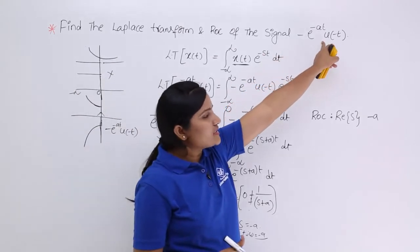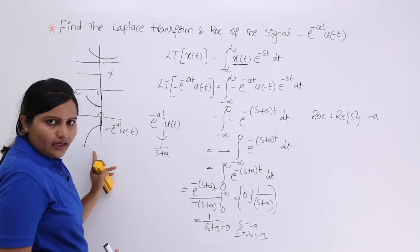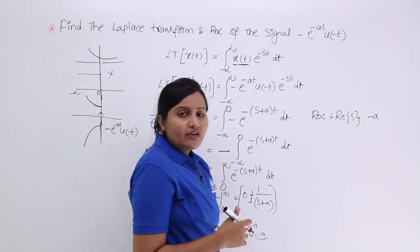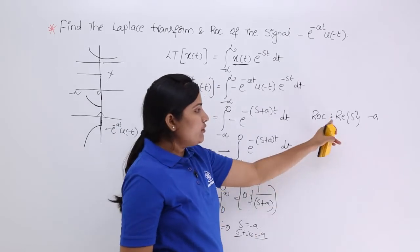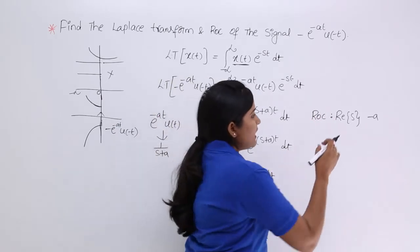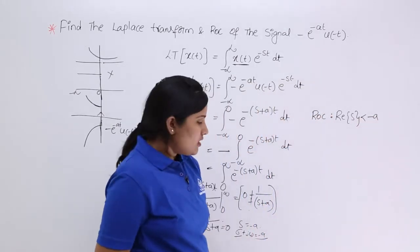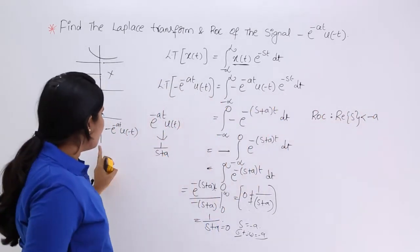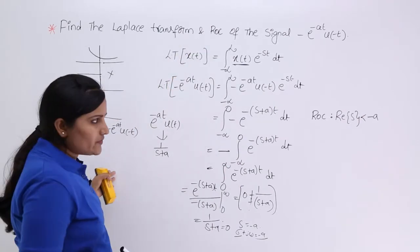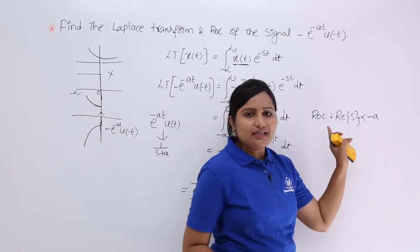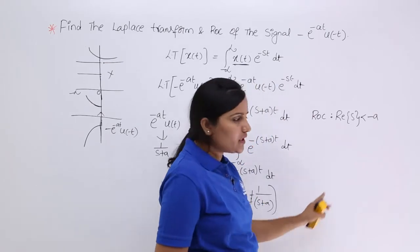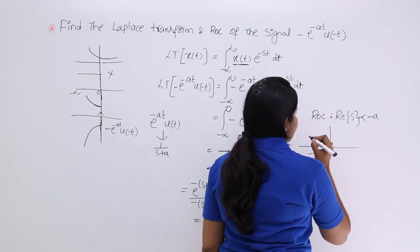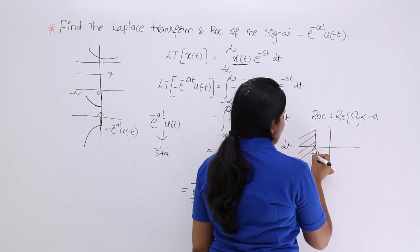Whether to use greater than or less than for the ROC is decided by the nature of the signal. Looking at the resultant signal, it is a purely left-sided signal. When the signal is left-sided, the ROC is defined as the real part of s less than the real part of the pole. So the ROC is: real of s less than minus a, meaning the left side of minus a on the sigma axis.